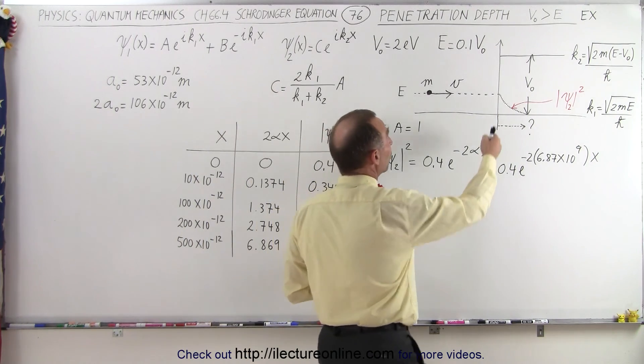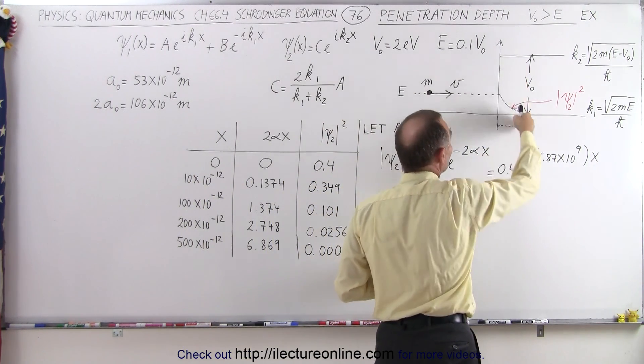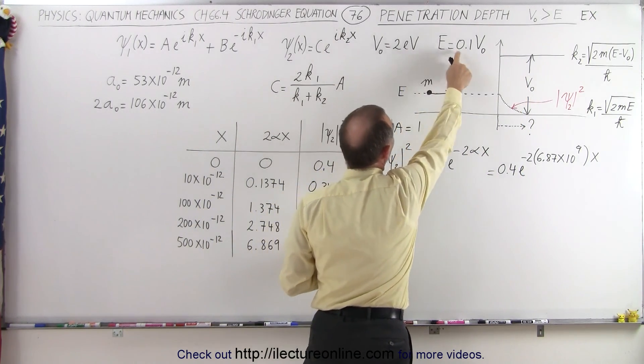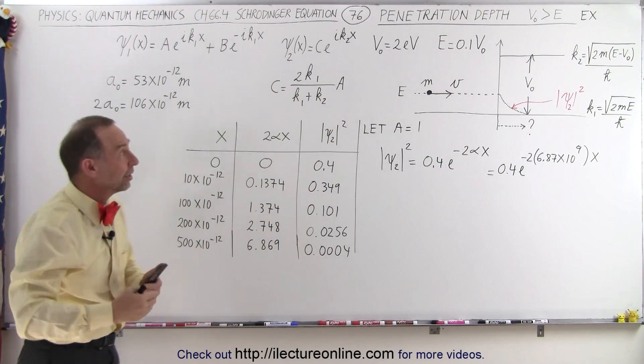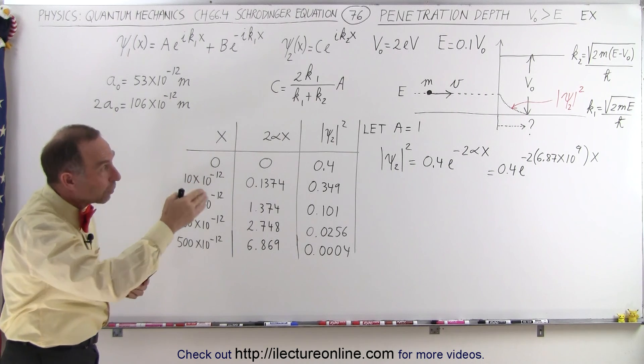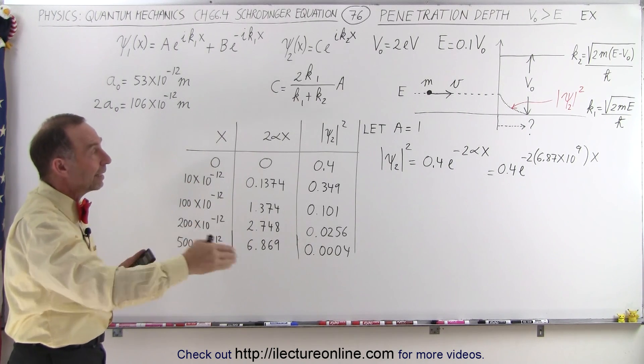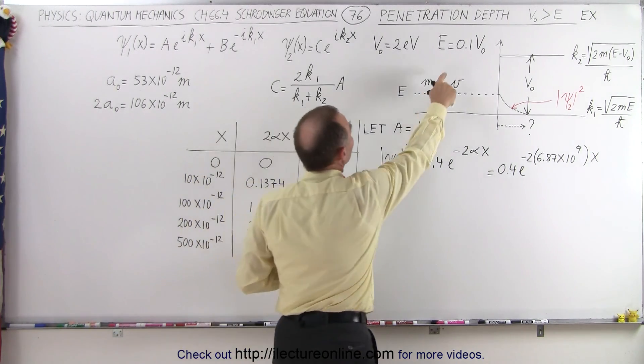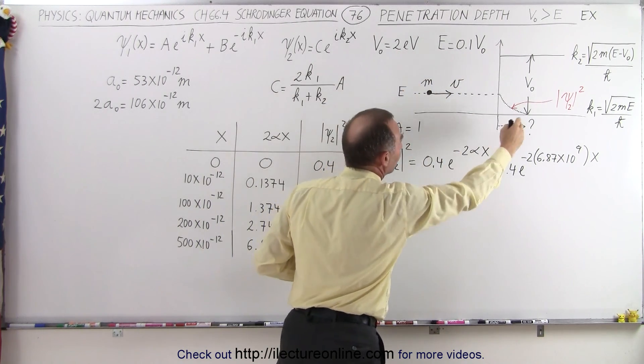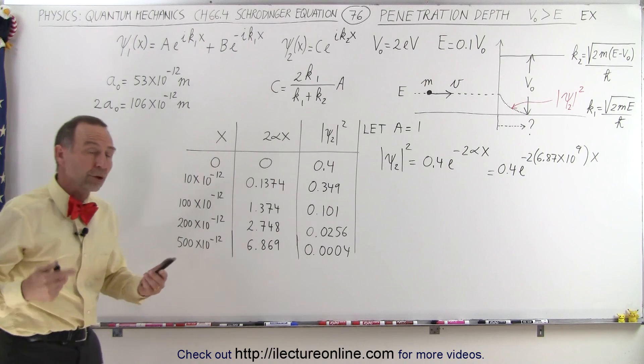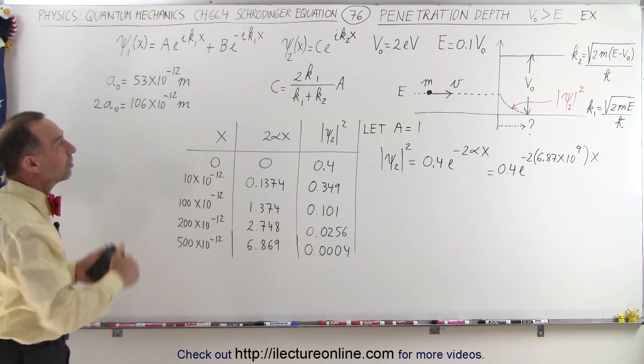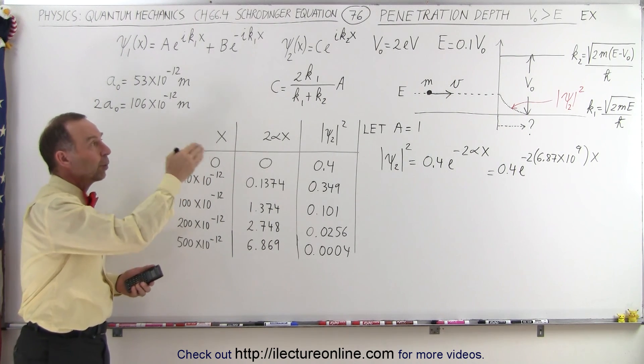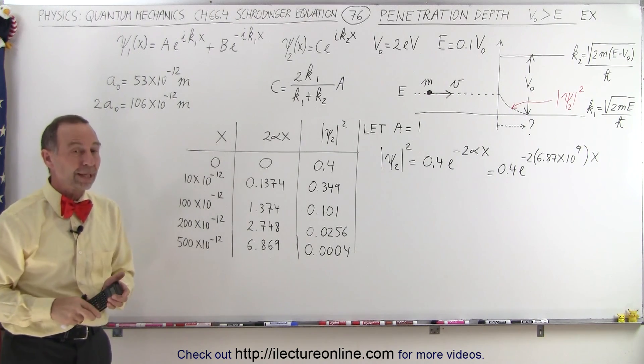When the potential step has a value that is 10 times the value of the energy of the particle, of course the greater that the potential step is relative to the energy of the particle, the less probable it will be that the particle will penetrate any distance into that barrier. Conversely, if the energy is almost as big as the potential, then we expect the particle to go a little bit further. So you can play around with those numbers, but at least now you can see how to figure out how far into a potential step a particle will go with a certain amount of energy relative to the energy of the step. And that's how it's done.